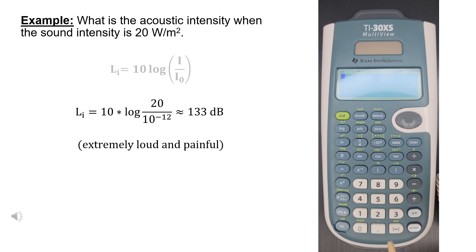For example, what is the acoustic intensity when the sound intensity is 20 watts per square meter? In this case, the sound intensity level equals 10 times logarithm, open parenthesis, 20 divided by 10 to the power minus 12, close parenthesis, which equals 133 decibels, which is extremely loud and painful.